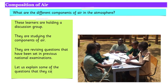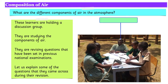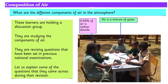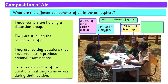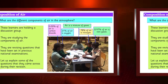Air is a mixture of gases. The components of air include the following: about 0.03% is carbon dioxide, about 21% is oxygen, about 78% is nitrogen, and about 0.97% is rare gases.